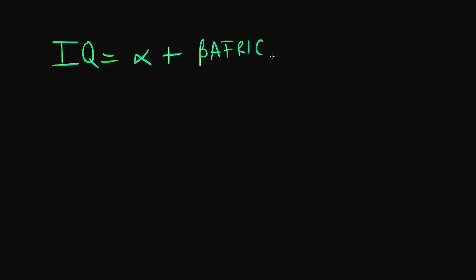This is a particularly controversial area in social sciences. Let's say we created a variable Africa, which is a dummy variable taking the value of 1 if an individual was educated in Africa and 0 otherwise.